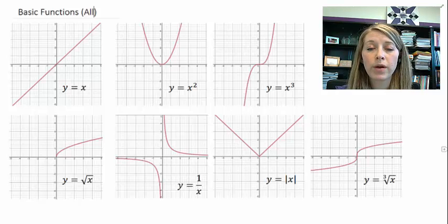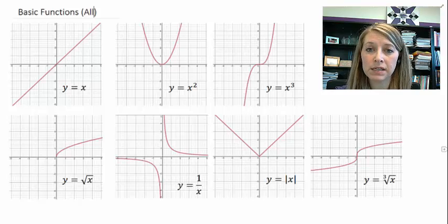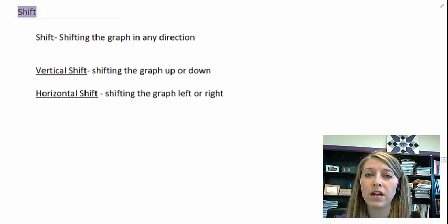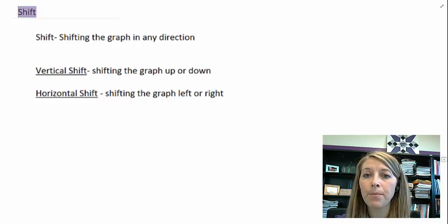There are three different ways that we can transform things, and I'm going to start with the easiest one. The easiest transformation to see and understand is a shift transformation — we're just going to move the graph in any direction: up, down, left, or right.